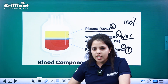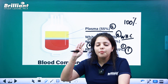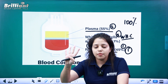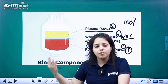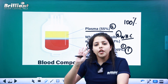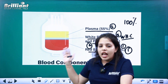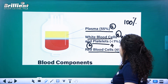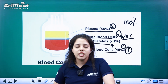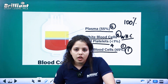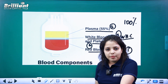The 4 components of blood are RBC, WBC, platelets, and plasma. 55% of blood is plasma, and 45% of blood is RBC. WBC and platelets make up about 1% of blood.